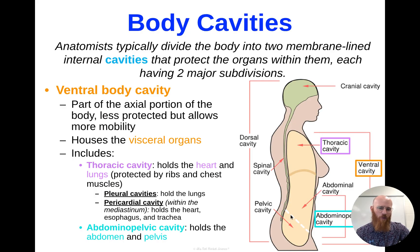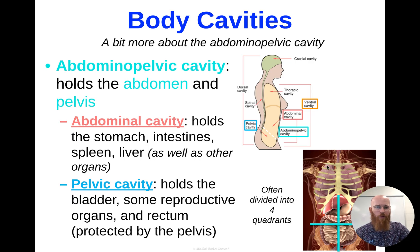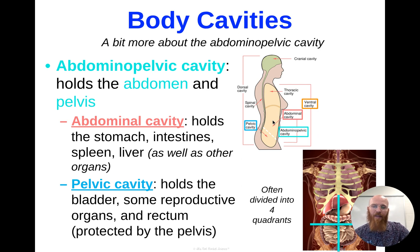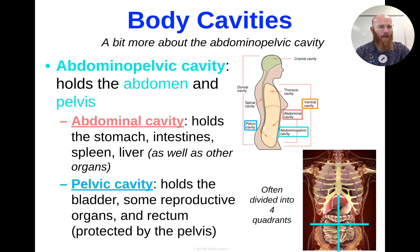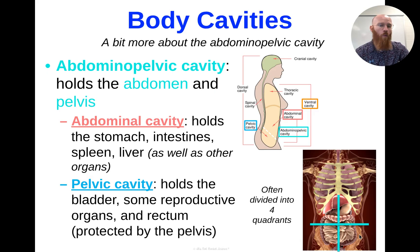A little more about the abdominal pelvic cavity: it houses the abdomen and the pelvis. In your abdominal cavity, you'll find your stomach, your intestines, along with your spleen and liver — those are the main large organs in that cavity. Your pelvic cavity holds your bladder, some reproductive organs, and the rectum, all protected by your pelvis. Within this abdominal pelvic cavity, as you can see in the bottom right corner, it's often divided into four quadrants: right upper, left upper, right lower, and left lower — so we can get more specific when describing the location of something like an injury.